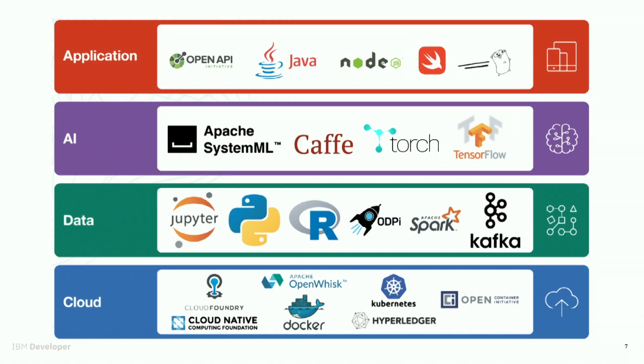One thing I want to mention — not many people are aware of this — is that IBM has a very rich history with open source. In fact, a lot of the tools, services, and products on the IBM Cloud are actually based on open source projects. We also have a whole organization under the developer advocacy umbrella that contributes to open source projects and is members of different foundations. People are often surprised — they had no idea IBM was involved with open source, but IBM has been very involved since the beginning.